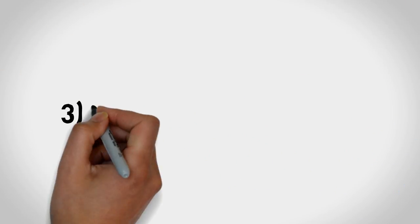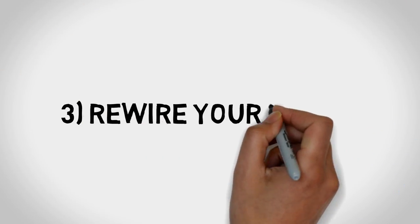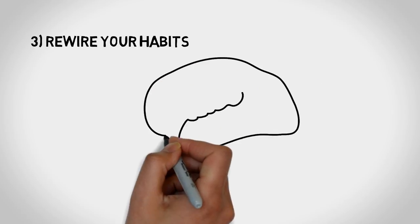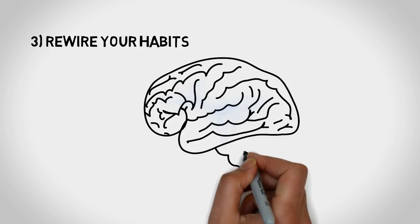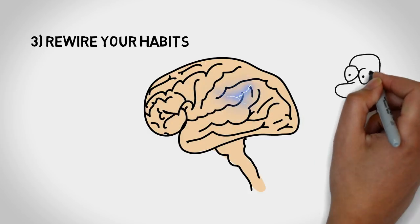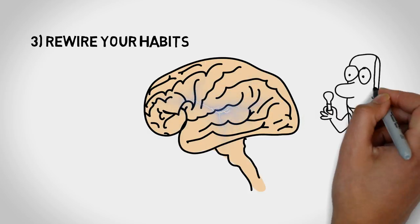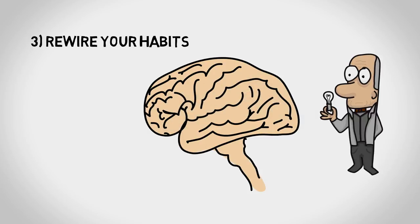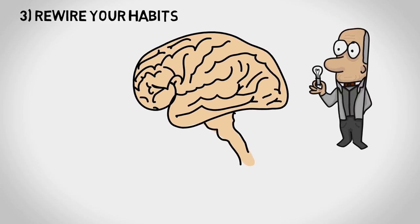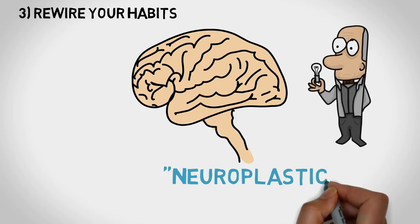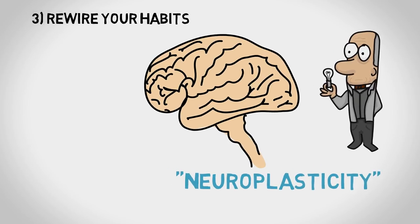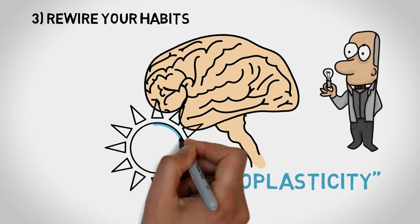Okay let's move on to number three, rewire your habits. Over the past 20 years scientists discovered that neural pathways of your brain change over time. The brain is dynamic, not fixed as everyone previously believed. They named this idea that our brain architecture can change, neuroplasticity. This supports the idea that regular positive thoughts and acts can rewire your brain towards positivity.